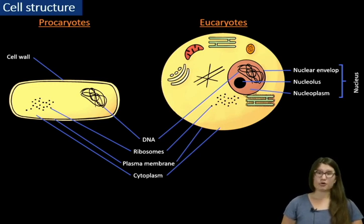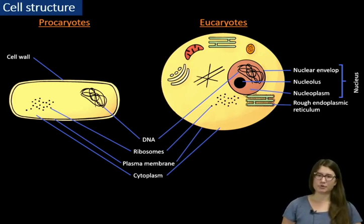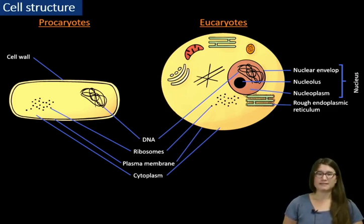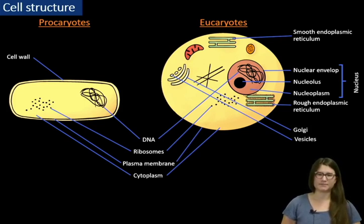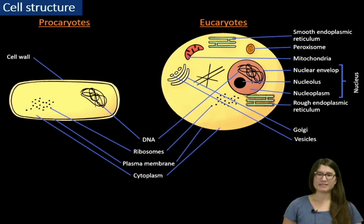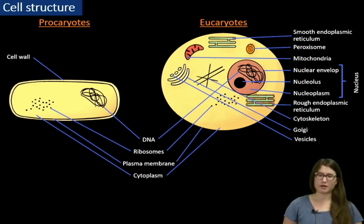Another subcellular structure of eukaryotes is rough endoplasmic reticulum. It is physically connected to the nuclear envelope and is covered with ribosomes. Membrane and secreted proteins are synthesized in this compartment. These proteins are then transported through Golgi and vesicles. There is also smooth endoplasmic reticulum responsible for lipid biosynthesis. Mitochondria is the energy power plant of the cell. Peroxisome is a waste management center where toxic molecules are detoxified. In order to move all this stuff around and to stay in shape, eukaryotes have cytoskeleton.